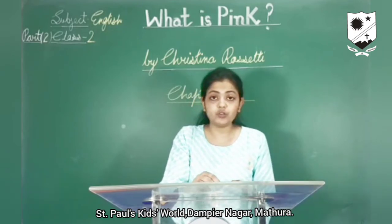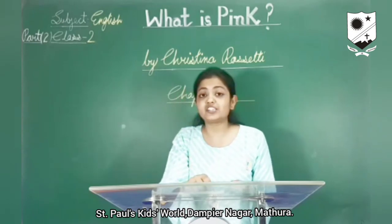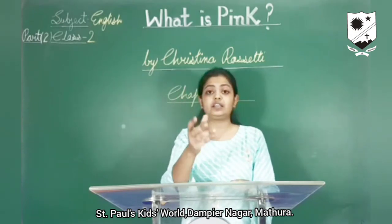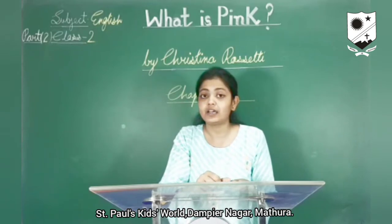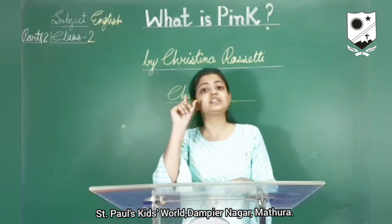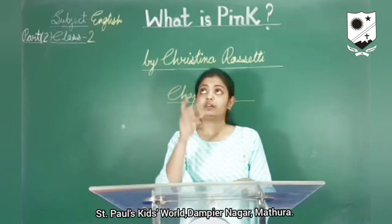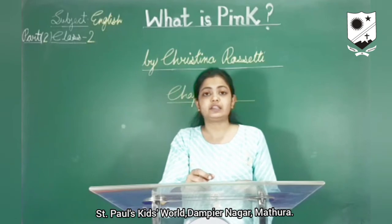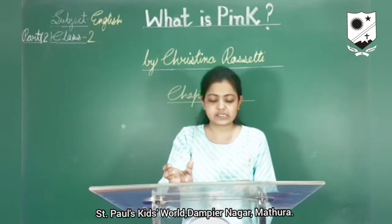Now what is blue? The sky is blue. The sky is of blue colour. When I ask what is the colour of sky, the sky is blue — where the clouds float through. When we look up into the sky, we see the clouds floating through.